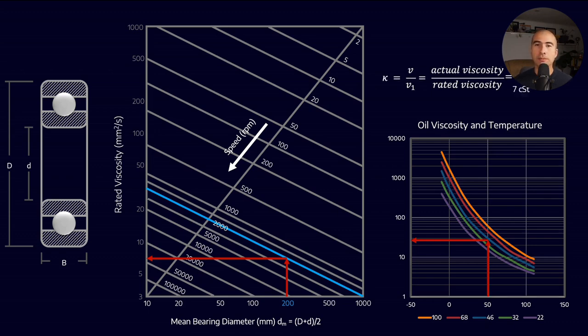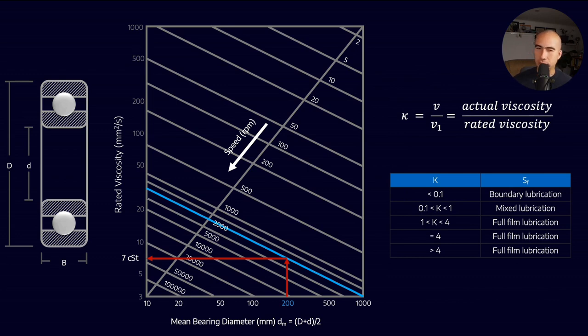With kappa ratio, 0.1 and lower indicates boundary lubrication with basically no lubricant film. Between that and about one is mixed lubrication, where actual versus rated viscosity is on the same order of magnitude. Beyond that is full film lubrication. A higher kappa ratio extends bearing life. Bearing life increases until kappa ratio of four - beyond that, additional film thickness doesn't increase bearing life further. That's why kappa ratio of four maximizes bearing life.